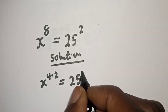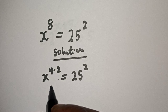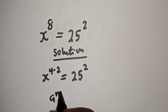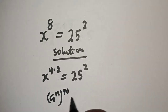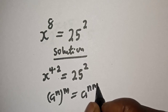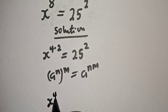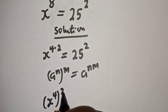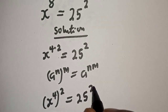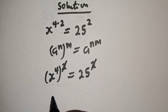Take note of this exponential rule: if you have a raised to power n, to the power of m, that is equal to a raised to power n times m. Then s raised to power 4 raised to power 2 is equal to 25 squared. The exponents cancel, so we have s raised to power 4 is equal to 25.